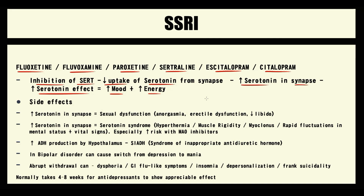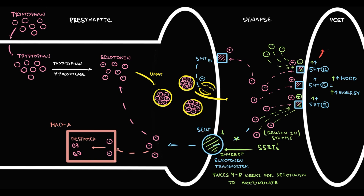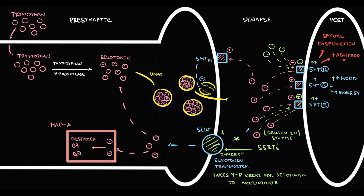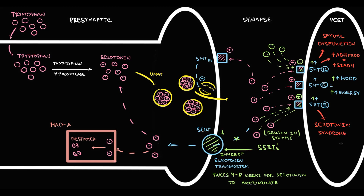Selective serotonin reuptake inhibitors are considered the safest antidepressants, but even they have side effects. First, excessive stimulation of serotonin receptors can cause sexual dysfunction — it's the most disturbing side effect and the number one reason why patients stop taking these drugs. Excessive stimulation of serotonin receptors can also cause increased production of antidiuretic hormone (vasopressin), which can cause syndrome of inappropriate antidiuretic hormone secretion. Overstimulation of serotonin receptors can cause serotonin syndrome.